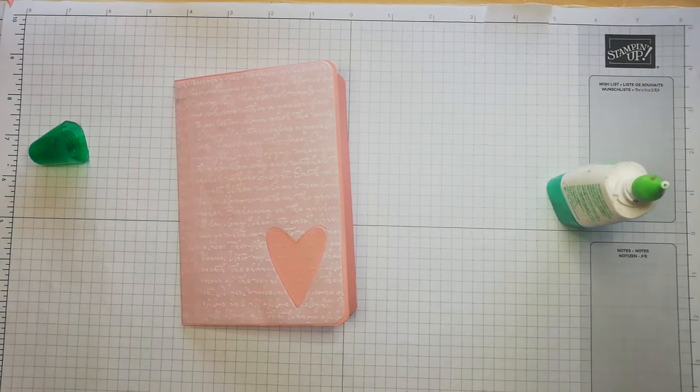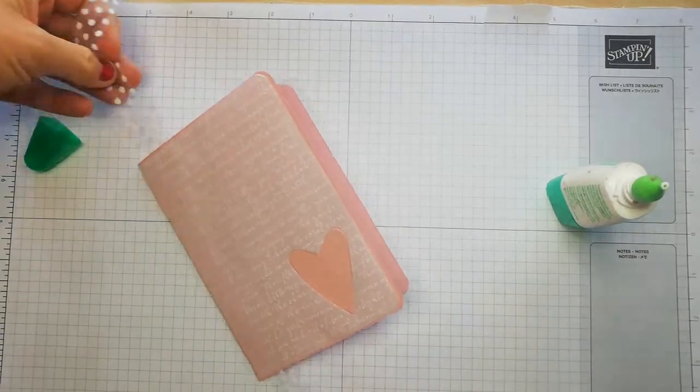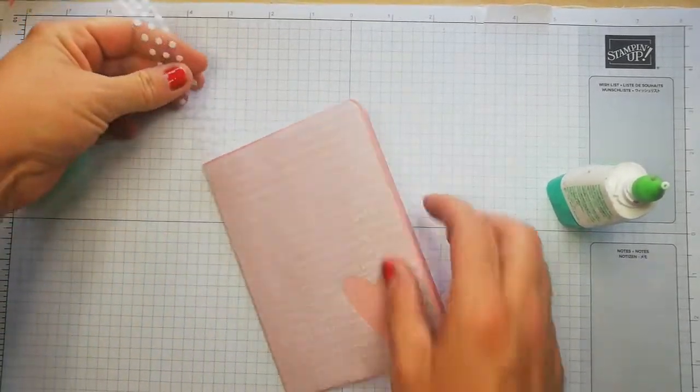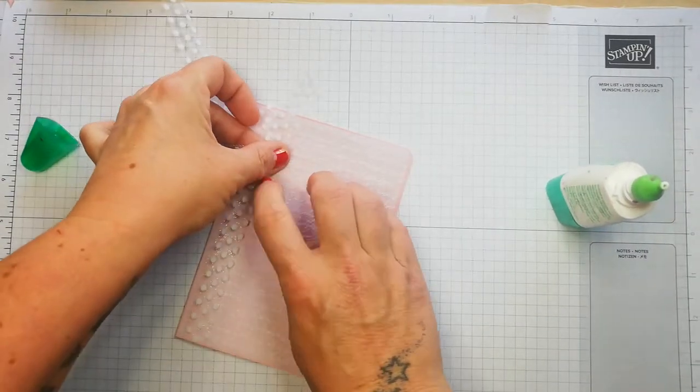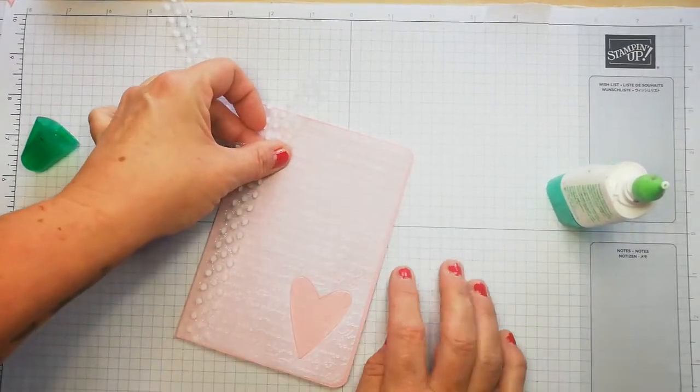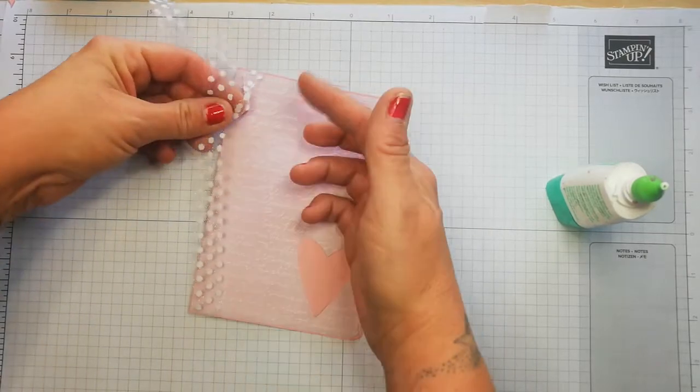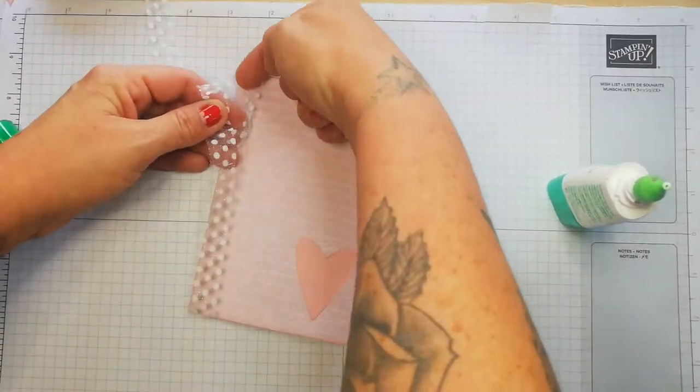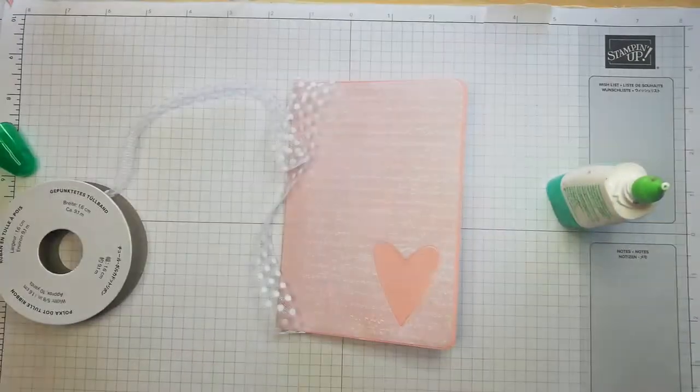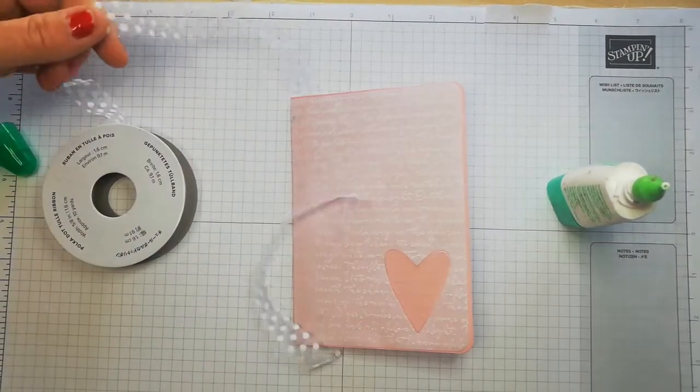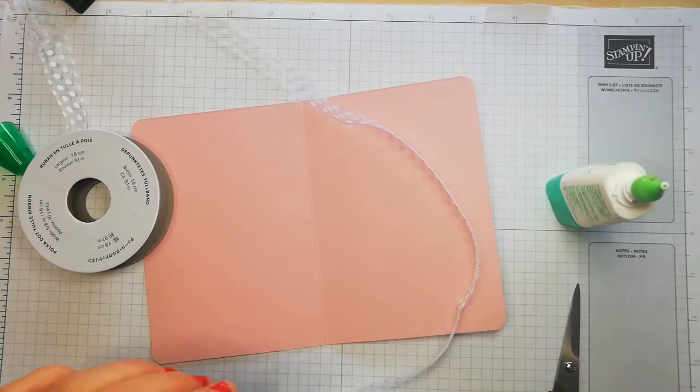I am going to use some Whisper White ribbon. We're simply going to bring that inside the card. It doesn't need to be a square knot. This ribbon's going to be hidden. If you didn't want to waste as much ribbon, you could tuck it under the vellum here and here at this point. I want to make sure that I've got enough length to actually tie the bow.